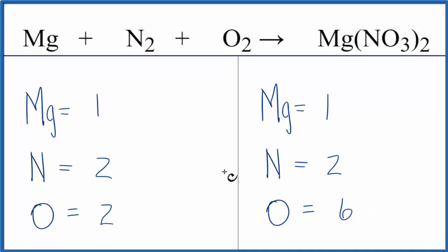It looks like everything is balanced except the oxygens, so let's put a three in front of the O2. Two times three gives us six, and this equation is balanced.